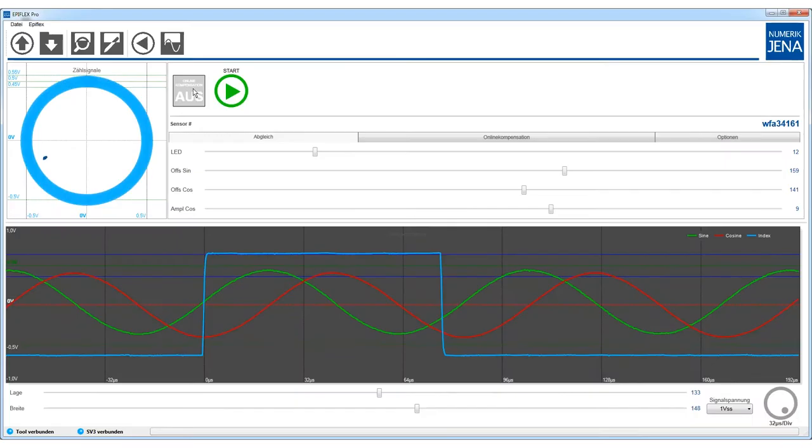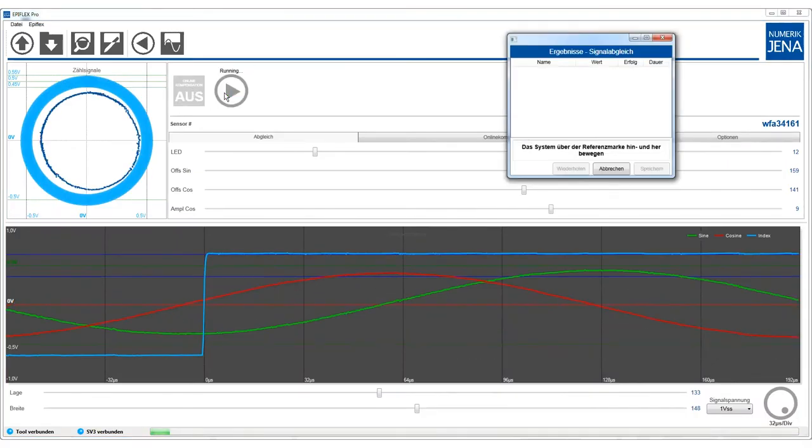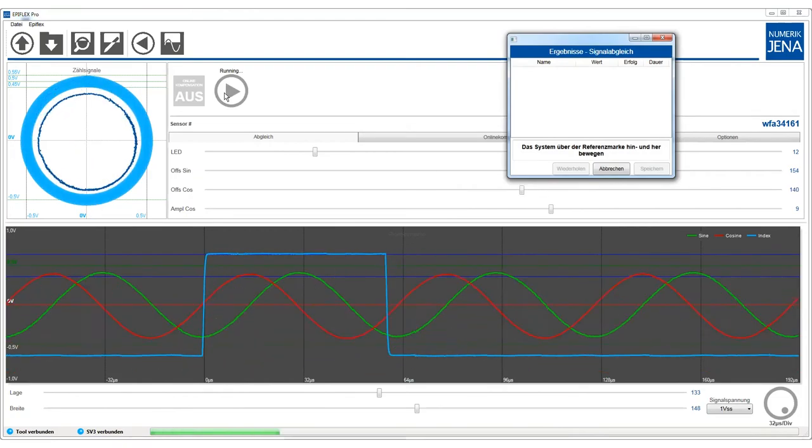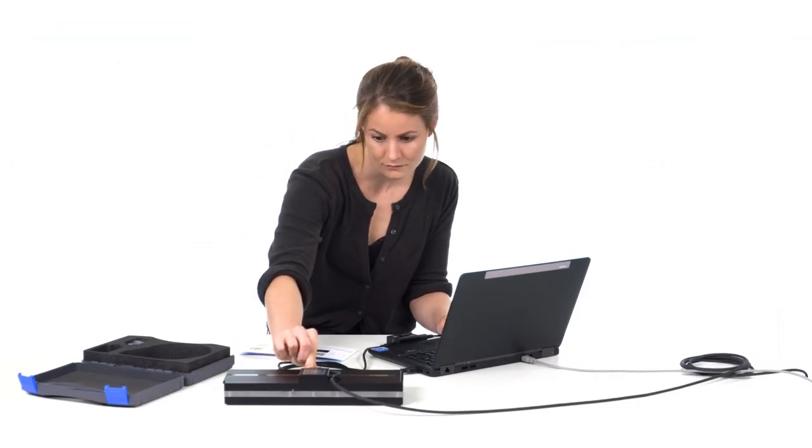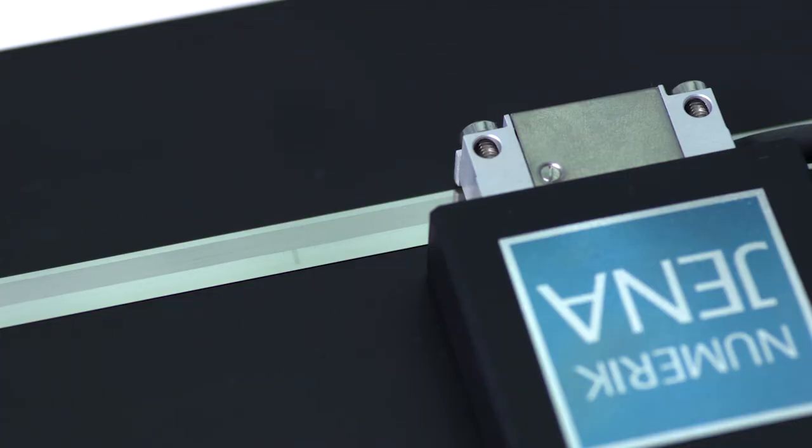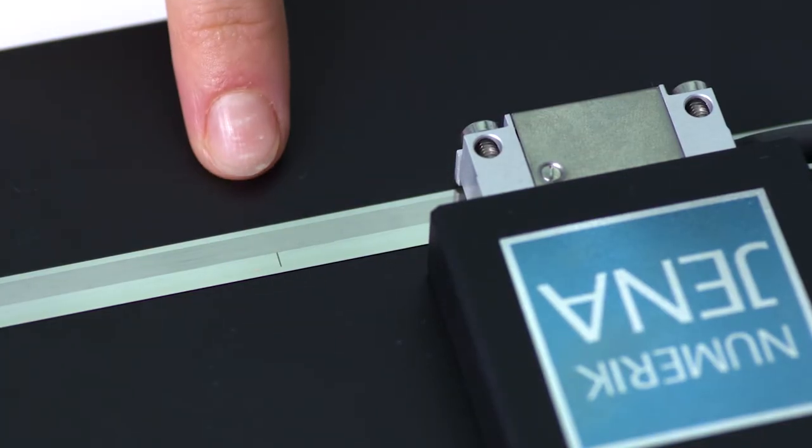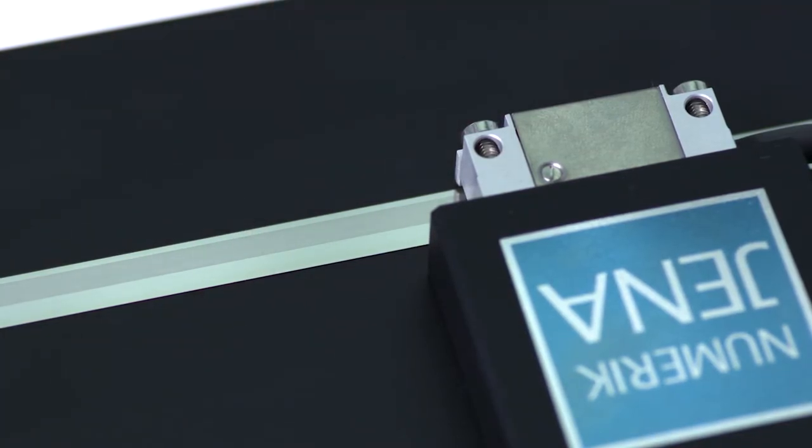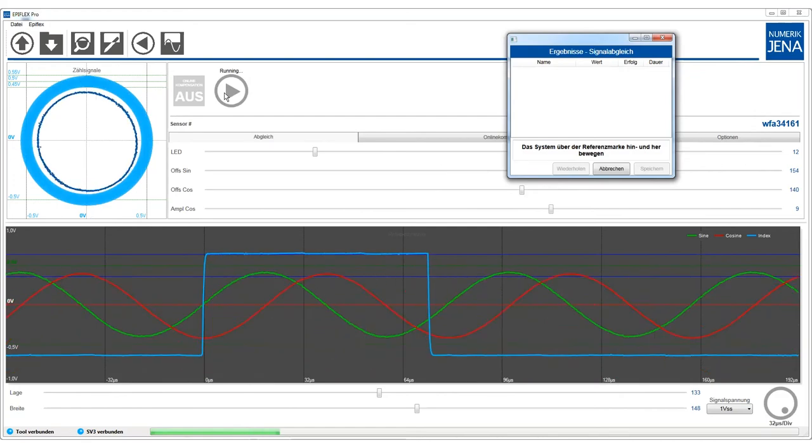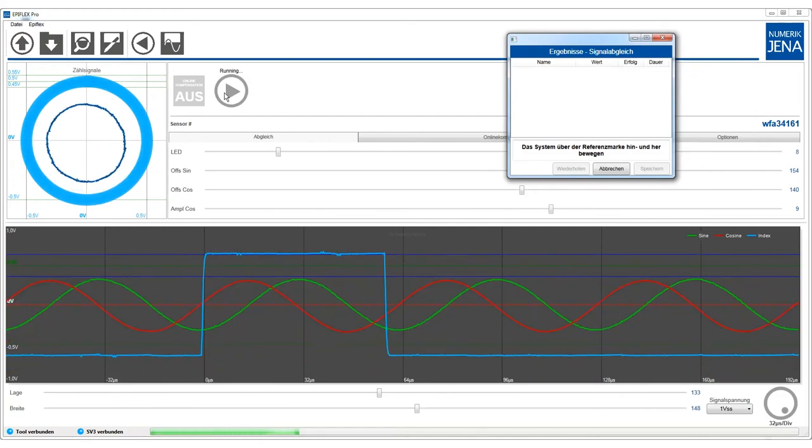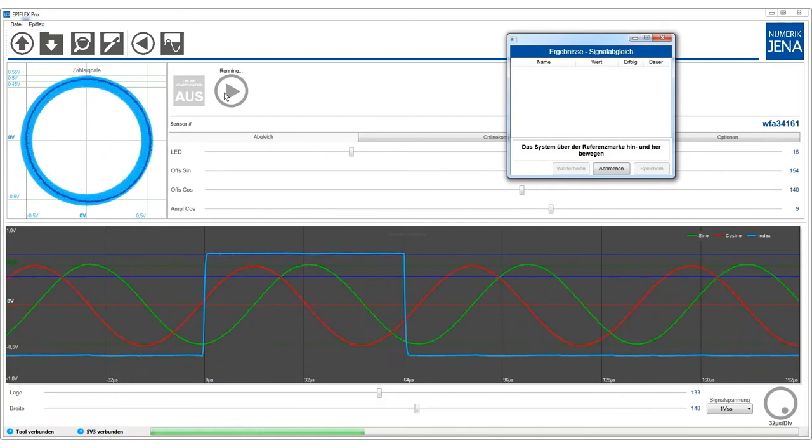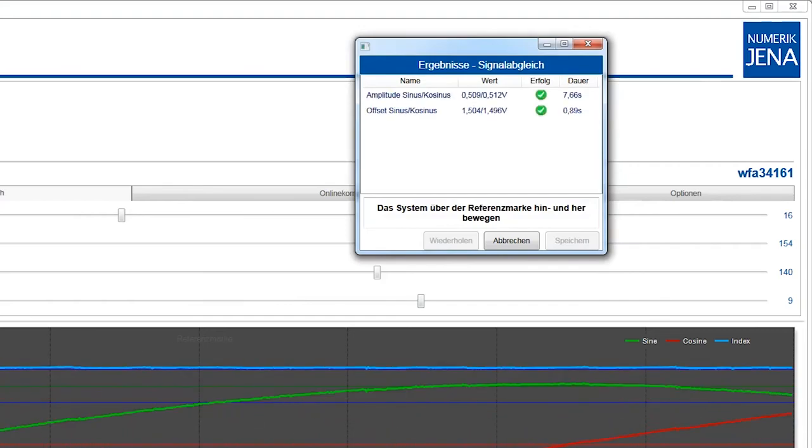Laina now starts the automatic signal adjustment procedure and moves the linear guide back and forth as smoothly as possible. Furthermore, it is important that the index mark on the scale tape is detected in order for it to be optimally adjusted by the software tool. During the signal adjustment process, a status window will be displayed in the EpiFlex software. This status window shows the individual optimization steps and their status.